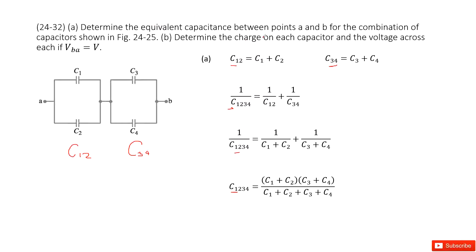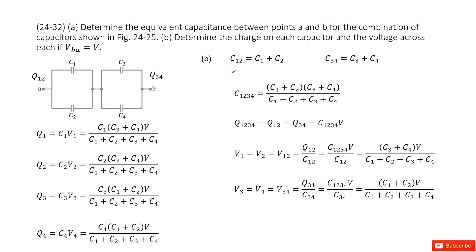Next, we determine the charge on each capacitor, given that VBA — the potential difference from point A to point B — is V. First, we write down the equivalent capacitance for the circuit. We determine the charge on the main branches. Since it is from the starting point to the end point, Q12 must equal Q34, and Q1234 = C1234 × V.